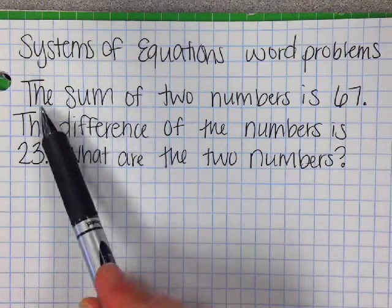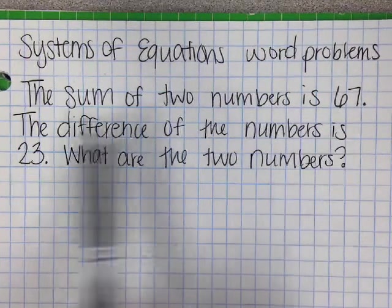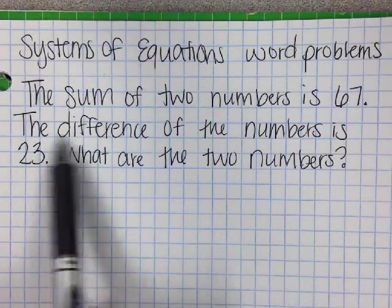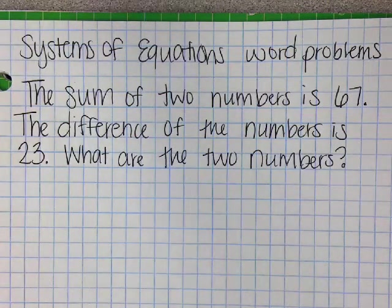So it says the sum of two numbers is 67. So we have two numbers that are going to add to 67, since the word sum means that. And then the difference of the numbers is 23. So anytime you're doing word problems, always find the important information first.